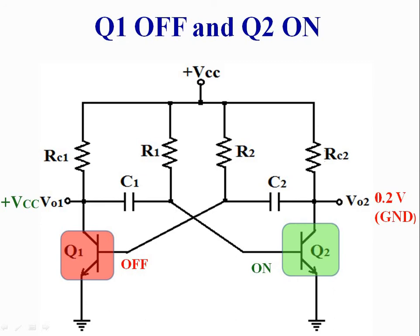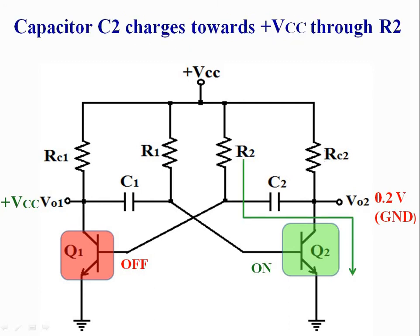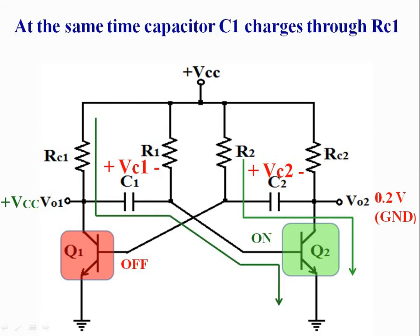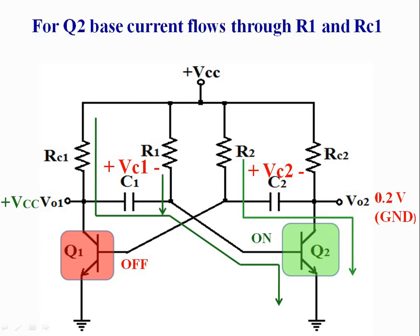Q1 is off and Q2 is on — this is the new state of the astable multivibrator. This time, capacitor C2 charges towards plus VCC through resistance R2, with the polarity of voltage across the capacitor as shown. The base of transistor Q1 is positive with respect to the collector of transistor Q2. At the same time, capacitor C1 charges through resistance RC1 towards plus VCC. For Q2, base current flows through R1 and RC1.